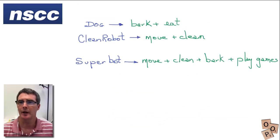Let's recap the type of things that we want here in a short way. We have a dog and now we're going to look at the things that the dog has as properties. What does it do? Well it can bark and it can eat. The clean robot moves and cleans. We want the super bot which moves, cleans, barks and plays games. So we're going to solve this.